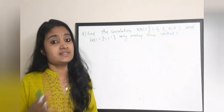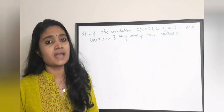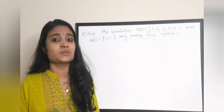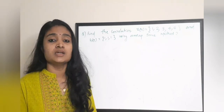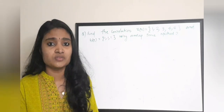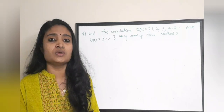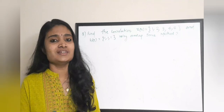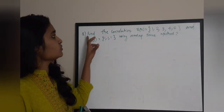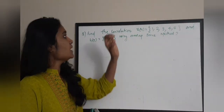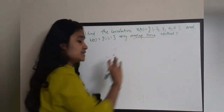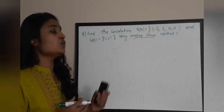All DSP exams will have either an Overlap-Save or Overlap-Add method question — these are 100% sure questions. Both are simple to study with only a little difference from each other. This question asks to find the convolution of x(n) and h(n) using the Overlap-Save method. I'll explain how to approach this problem step by step.